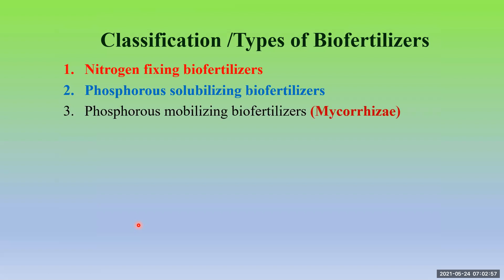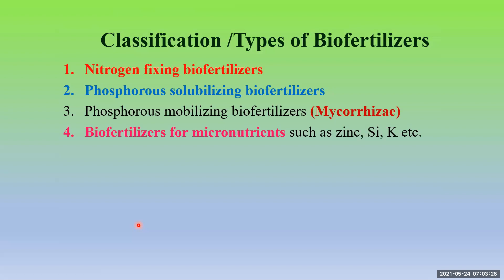Then phosphorus mobilizing mycorrhizae — mycorrhizae means it is an association between fungi and root. The fungus in combination with its plant root partner can bring about distant nutrients towards the plant, absorbs more water and gives it to its plant partner. So mycorrhizae improves water absorption, nutrient absorption, resistance of the plant to pests, resistance to fungal and bacterial attack. Then biofertilizers which add micronutrients like zinc or silicon to the soil, and then we have organic fertilizers.